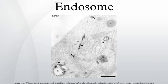Endosomes comprise three different compartments: early endosomes, late endosomes, and recycling endosomes. They are distinguished by the time it takes for endocytosed material to reach them, and by markers such as Rabs. They also have different morphology.